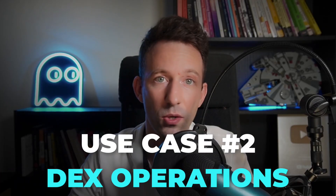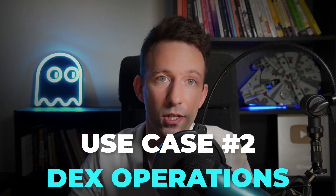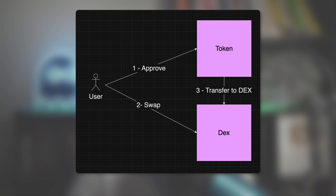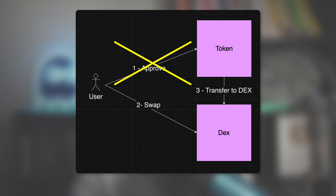Another use case is to automate the operation of a DEX. In general, users need to approve funds with a first transaction and then execute the swap with a second transaction. It's complex, takes more time, and is hard to explain to first-time users. But with a Reactive smart contract, you can simplify this and reduce the whole operation to a single step.